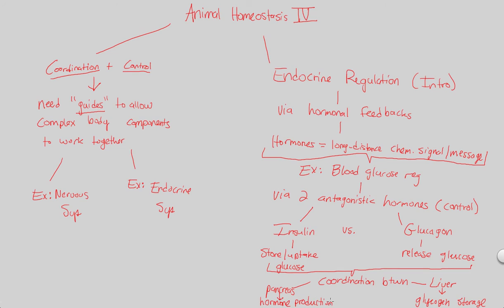Do we want to make insulin from the pancreas to store and uptake glucose? Or do we want to make glucagon so we can go to the liver, break down that glycogen into glucose, and release it throughout the body? This is a classic example of an endocrine regulatory system — two antagonistic hormones doing this. We'll get into the details of insulin versus glucagon and many other hormone examples as we move forward. That concludes our look at homeostasis — it's really important to appreciate that this is an ongoing, ever so efficient process constantly happening within us. We'll begin now our in-depth look at anatomy and physiology with the endocrine system next.